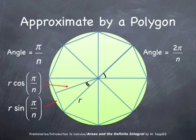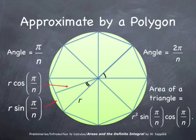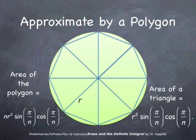So, the area of the triangle is one half times 2 times r times sine pi over n times r times cosine pi over n. The twos cancel out and the area of one triangle is r-squared sine pi over n times cosine pi over n.